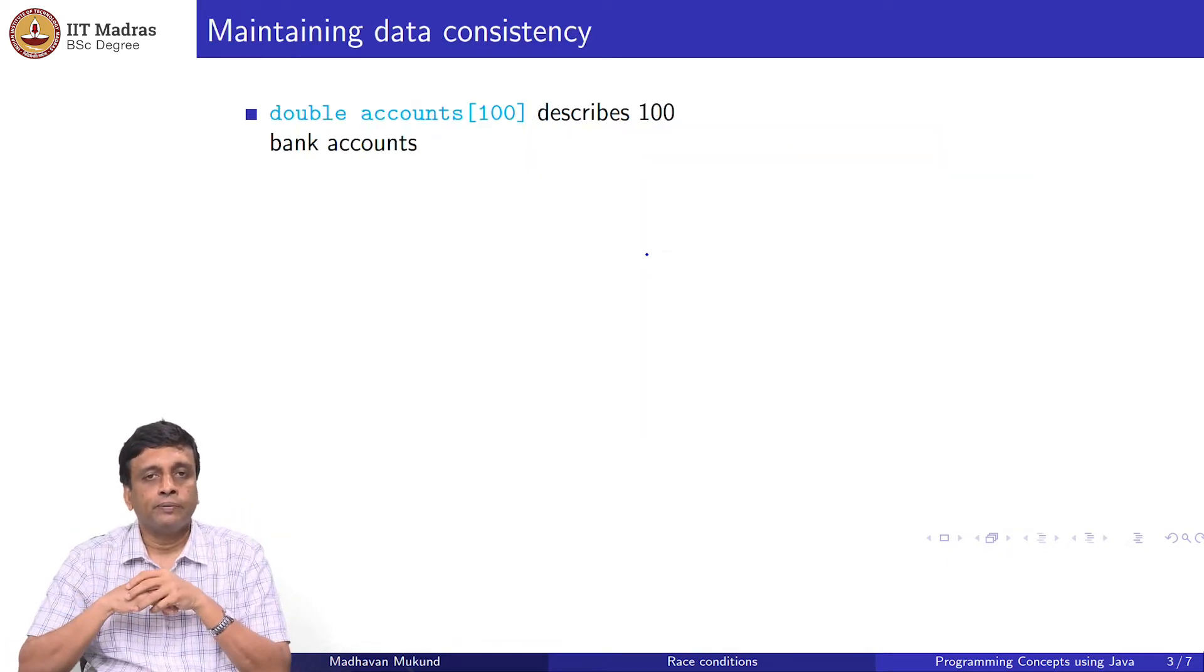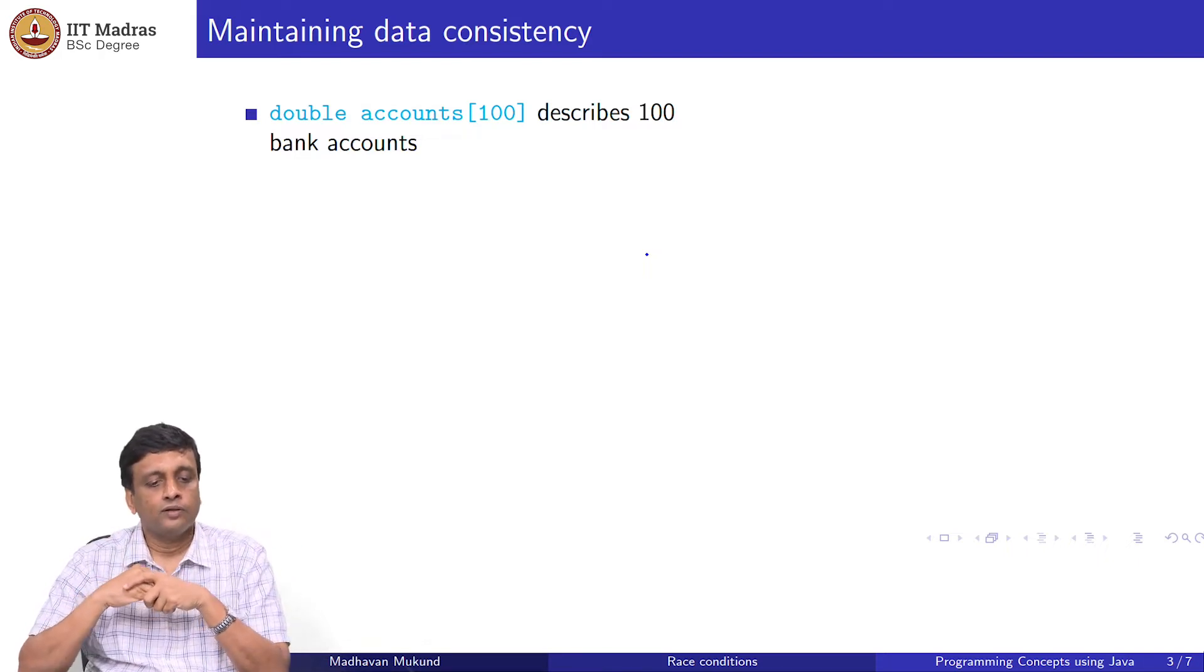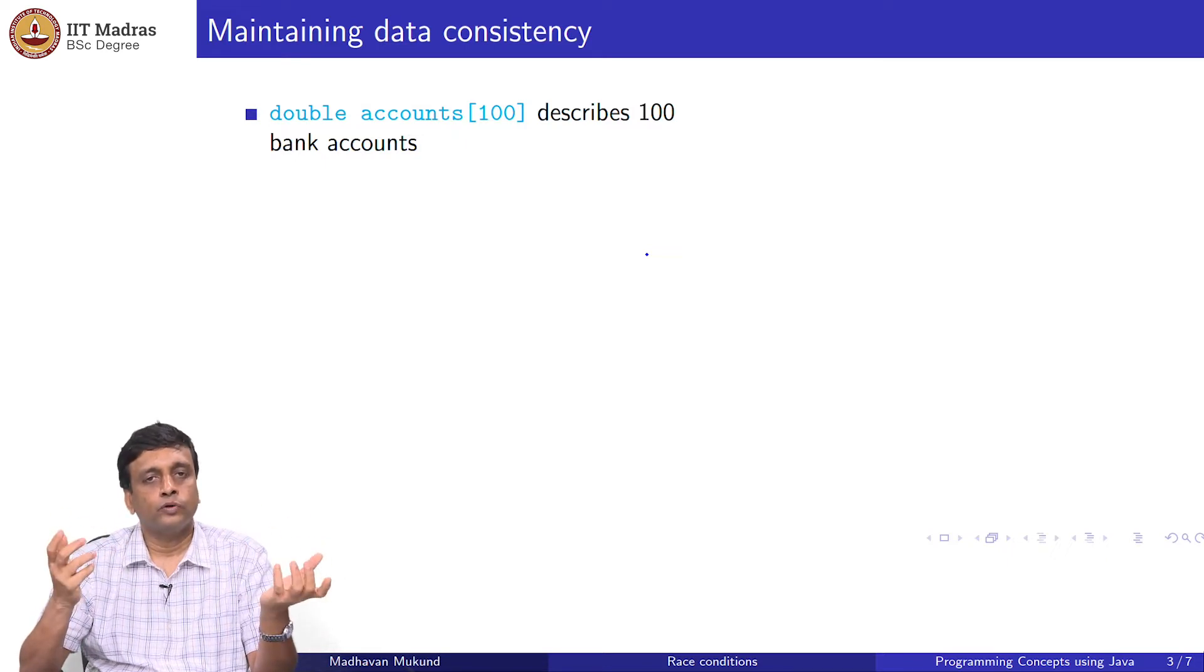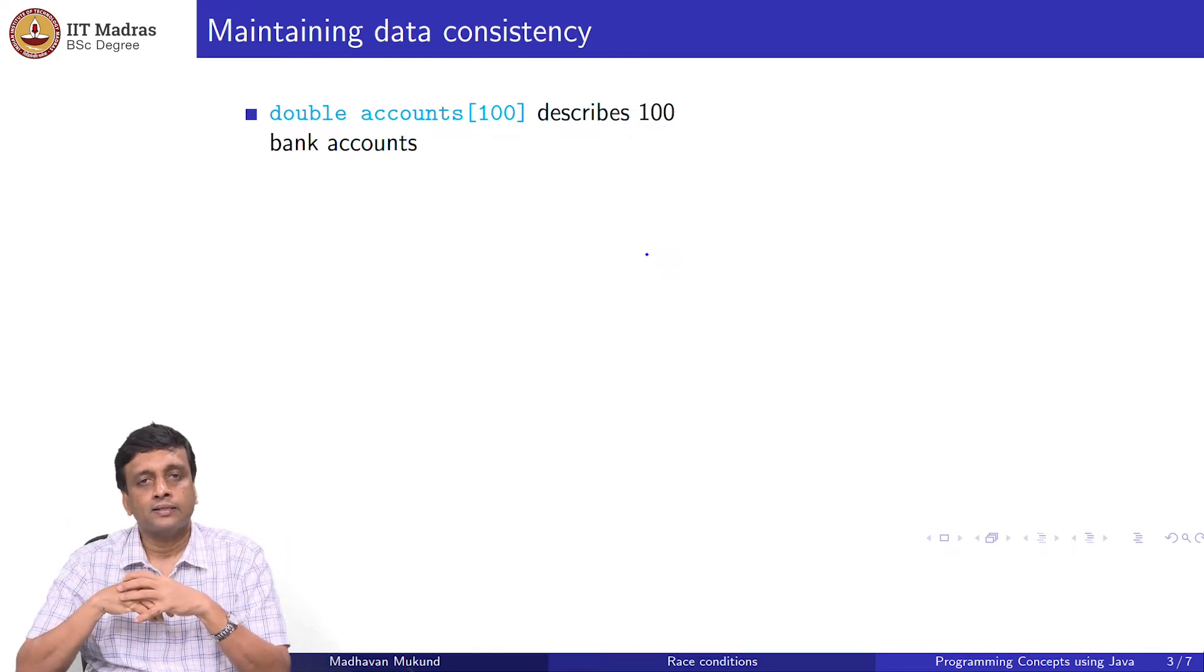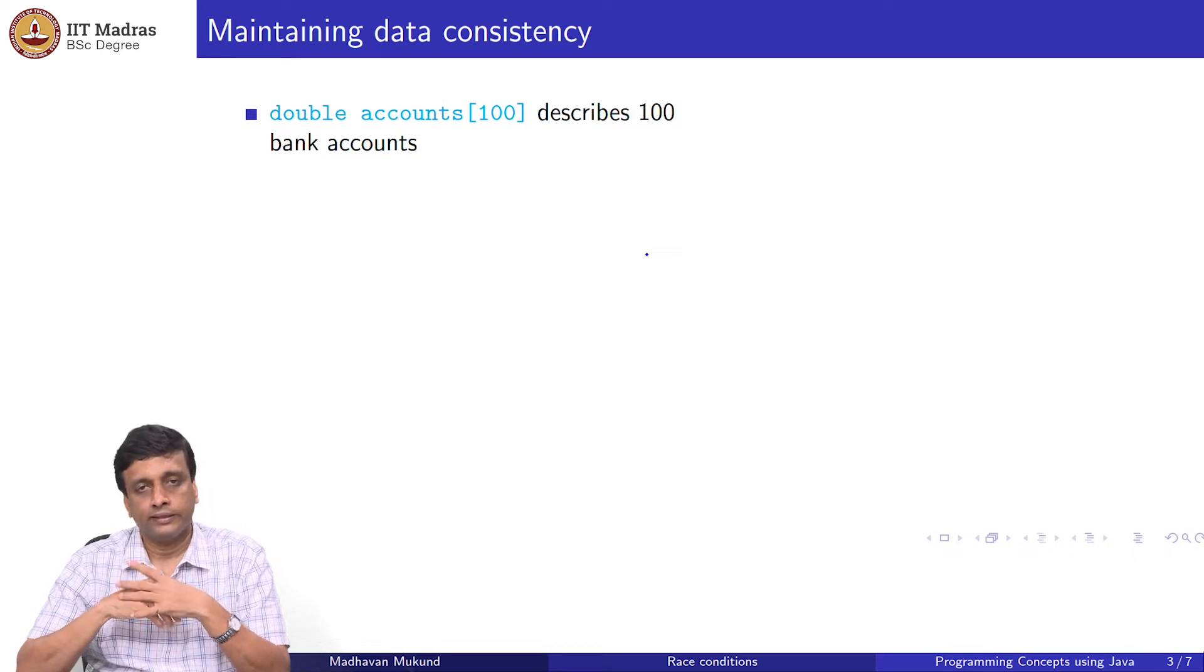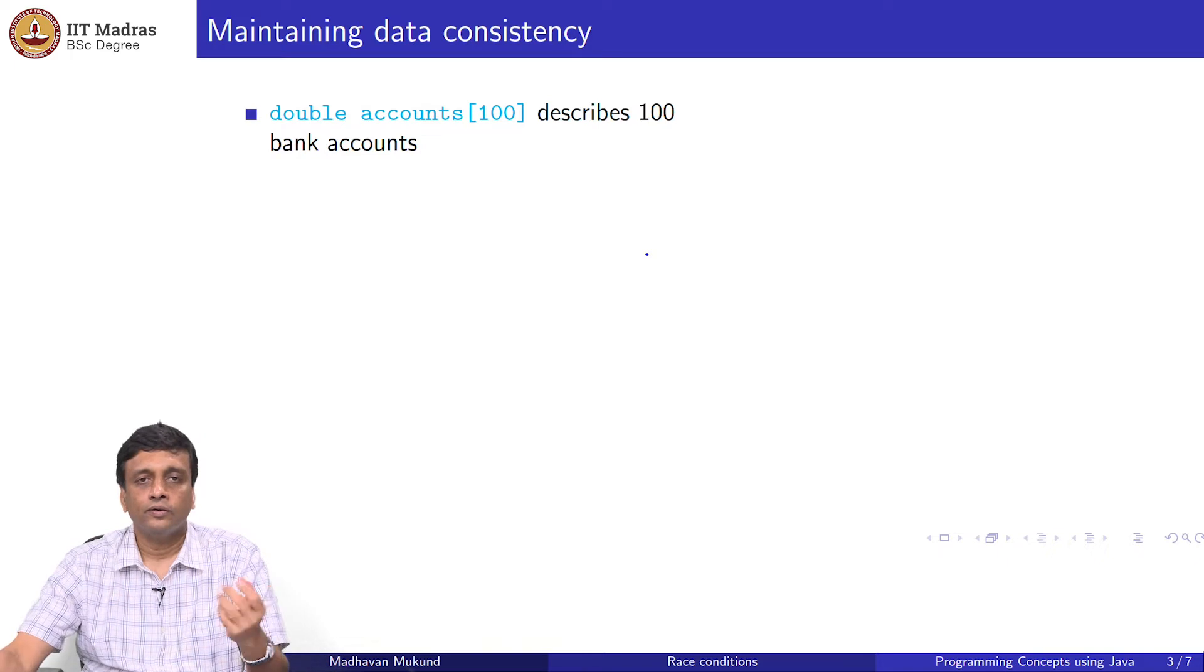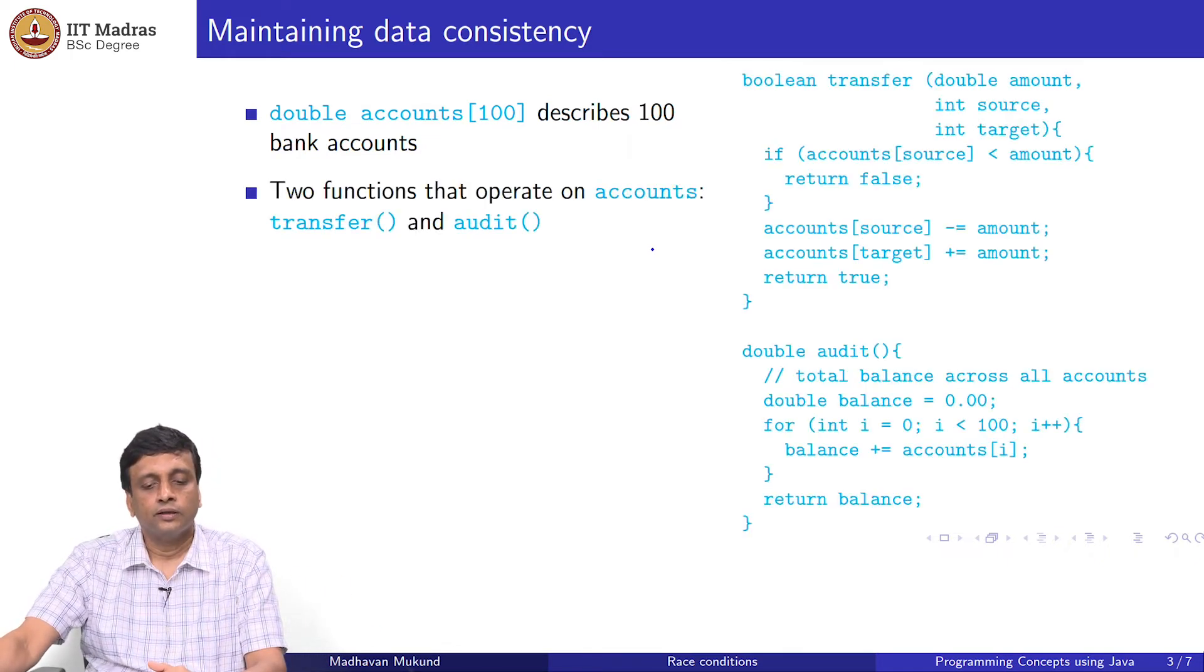Let us look at a more typical example of concurrent programming where race conditions are more meaningful. Suppose we are maintaining some bank account information. We have an array in which we keep the balance in 100 accounts, and the account numbers are implicitly 0 to 99. For each account, we have the current balance, and this is all stored in an array called accounts.